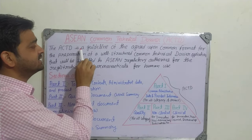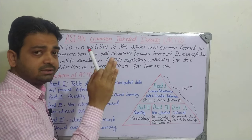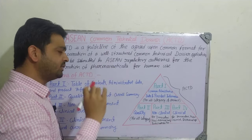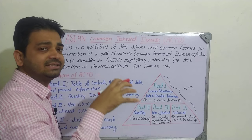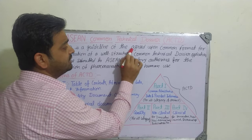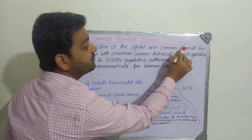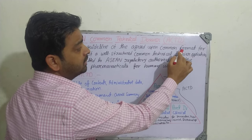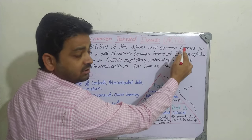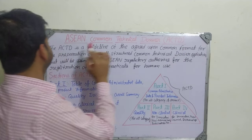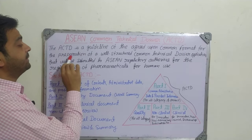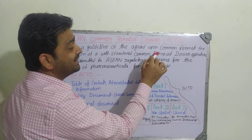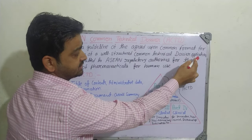The ACTD is a guidelines, like we have discussed in CTD and ECTD, same likewise, but it is only for the Asian countries. Guidelines of the agreed upon common format — that's what common format, common form, common details we are expecting for the preparation of a well-structured common technical dozer application.